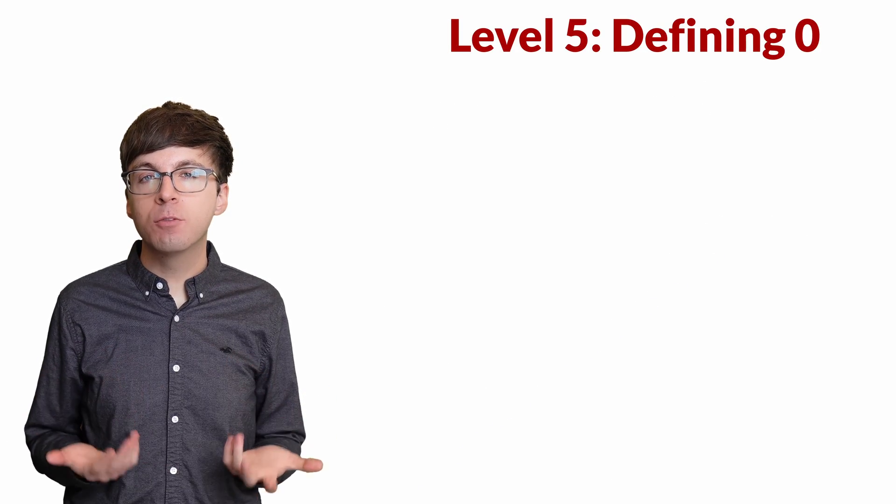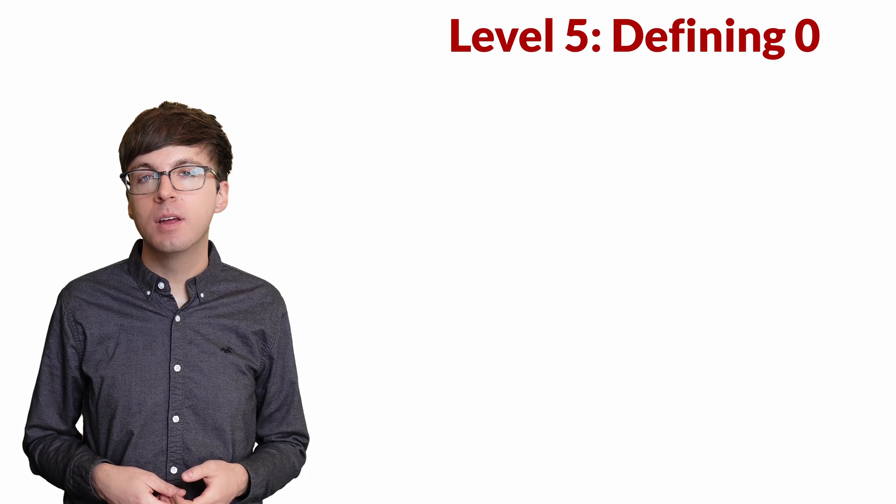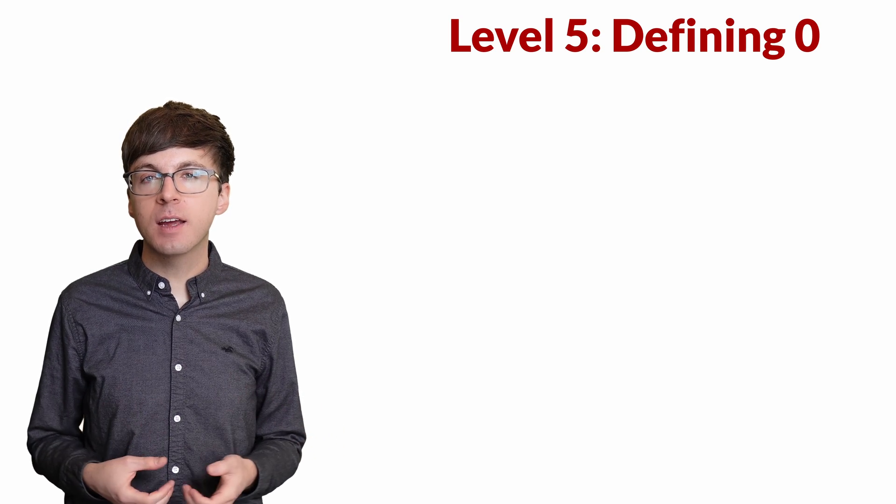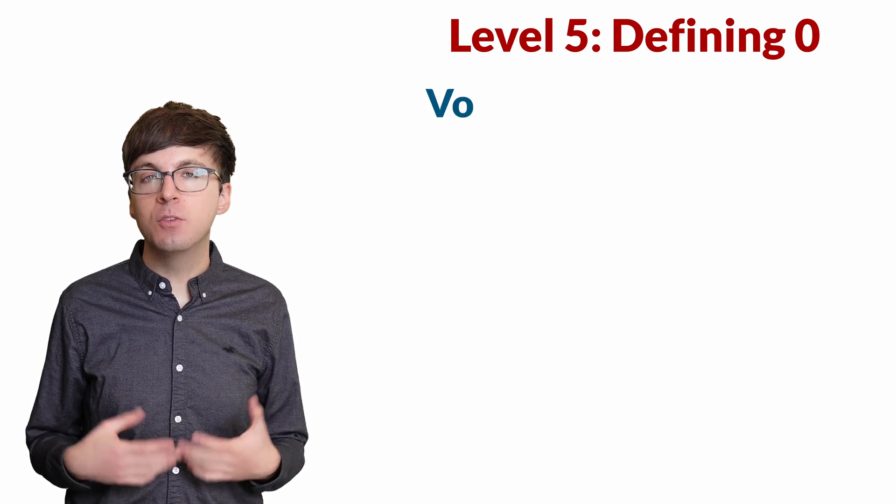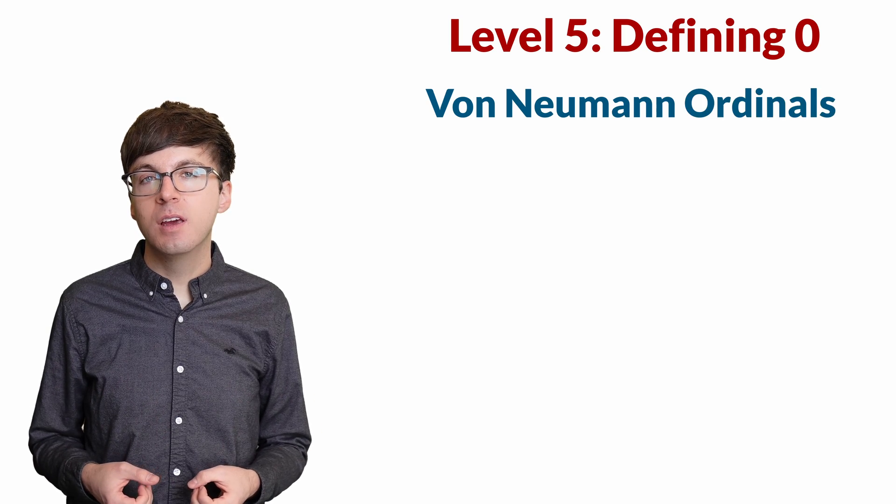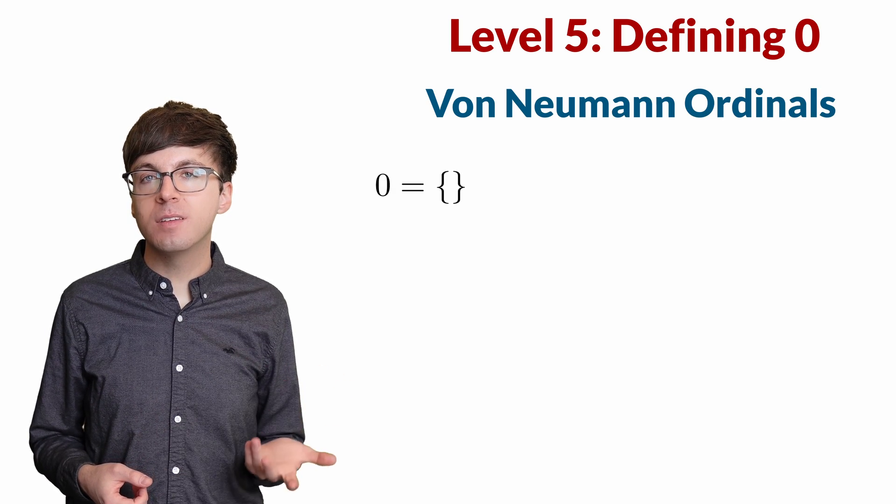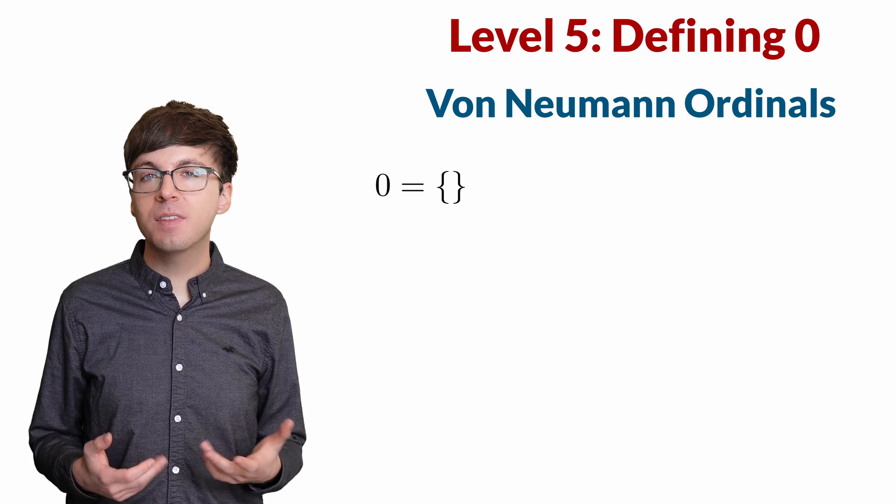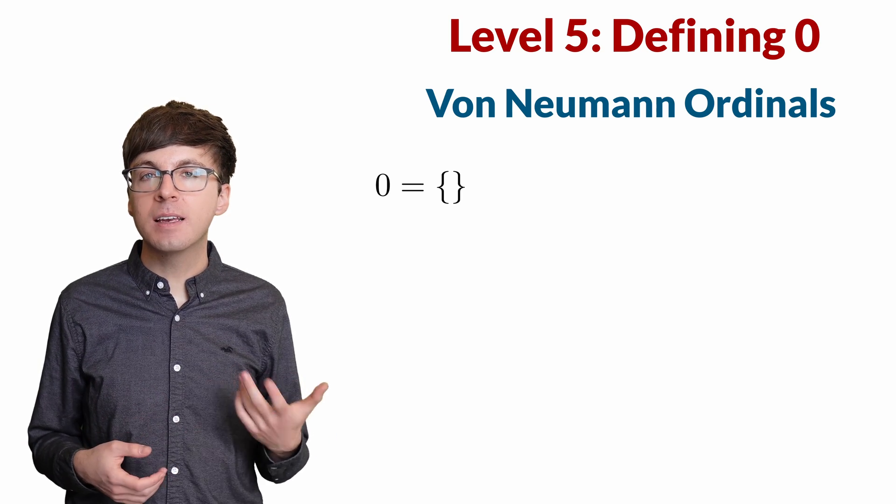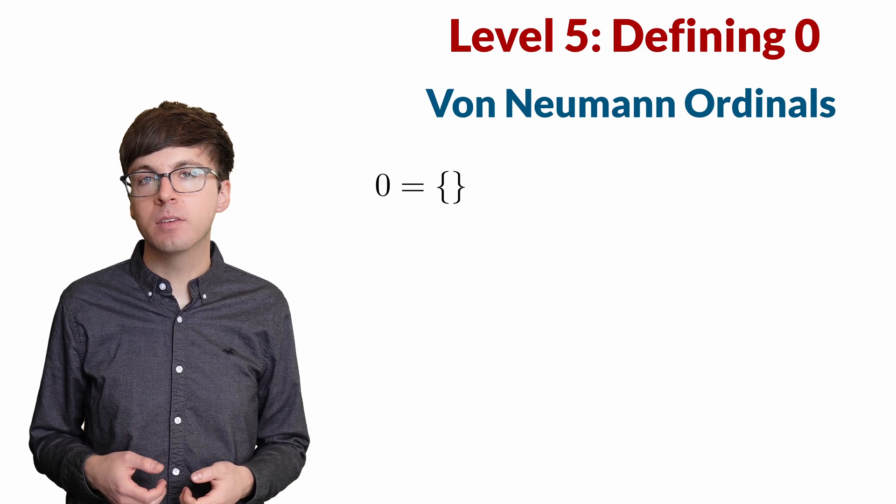For level 5, let's see how we can rigorously define zero. One common way to define the natural numbers in set theory is with the von Neumann ordinals. We start by defining zero as the empty set. This is a set that contains nothing. We can think of it like an empty box. There's nothing inside.